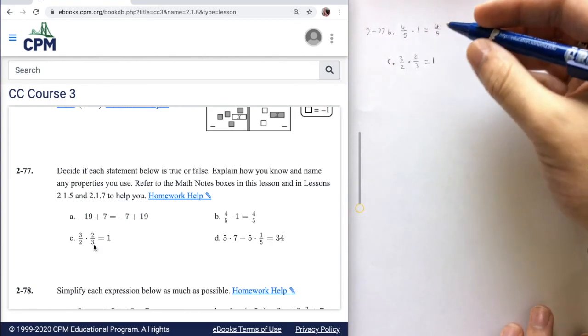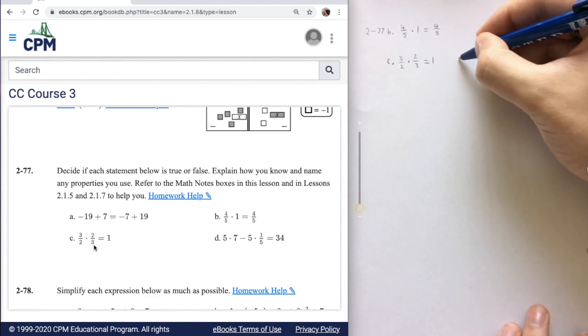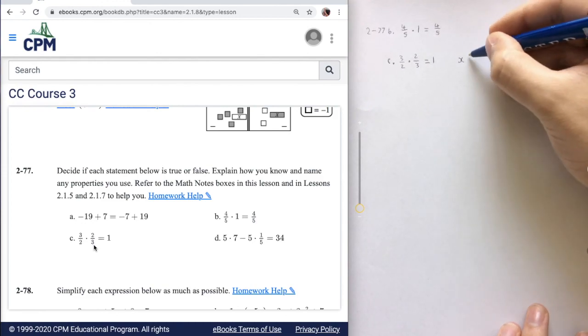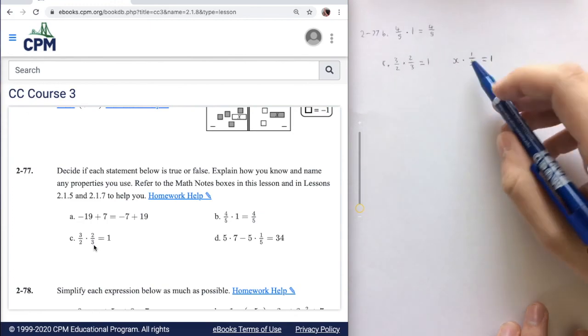As a reminder of what the inverse is, it says that if you have some number, let's say x, and you multiply it by its inverse, which is going to be 1 over x, you will just get 1, no matter what x is.